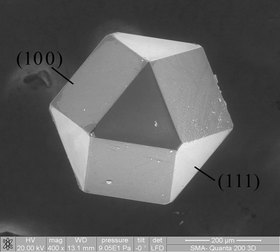Nanomaterials describe, in principle, materials of which a single unit is sized in at least one dimension between 1 and 1000 nm but is usually 1 to 100 nm. Nanomaterials research takes a materials science-based approach to nanotechnology, leveraging advances in materials metrology and synthesis which have been developed in support of microfabrication research.